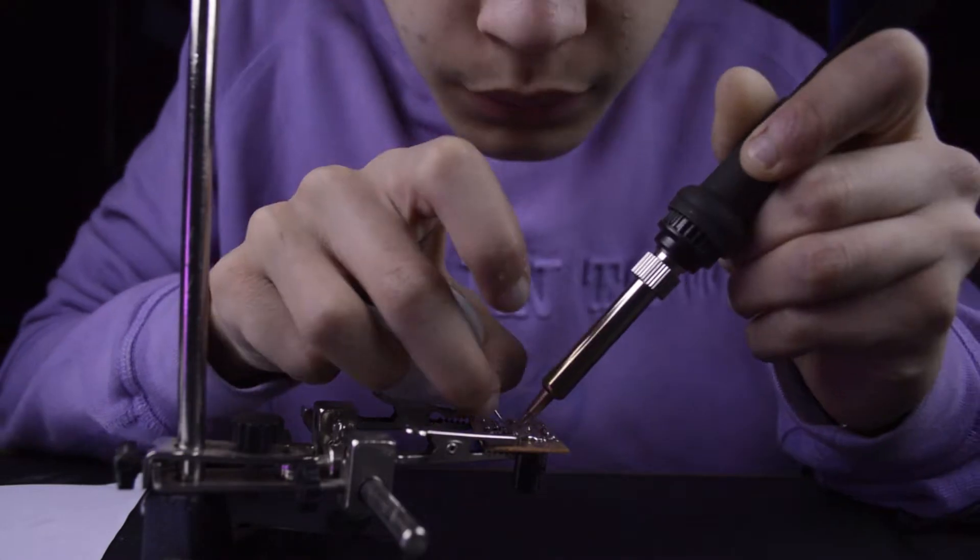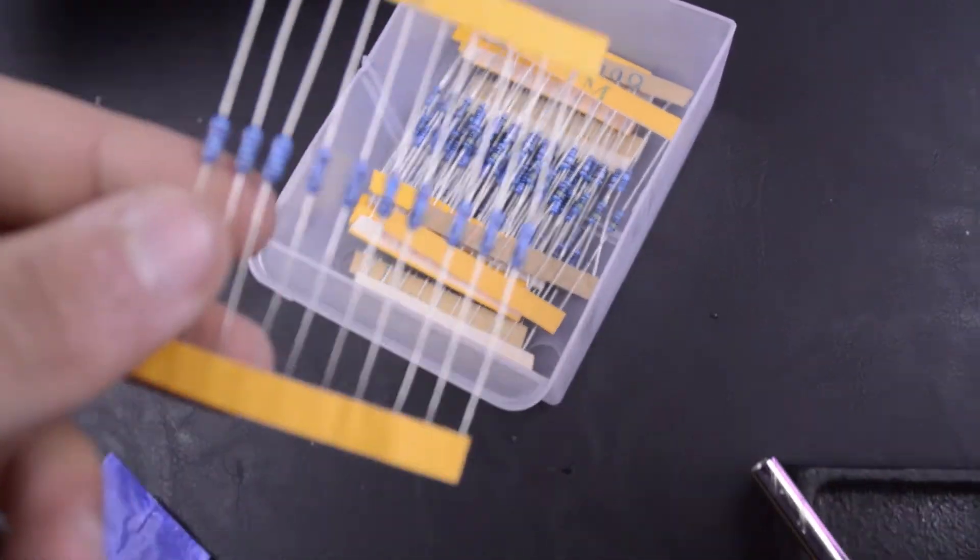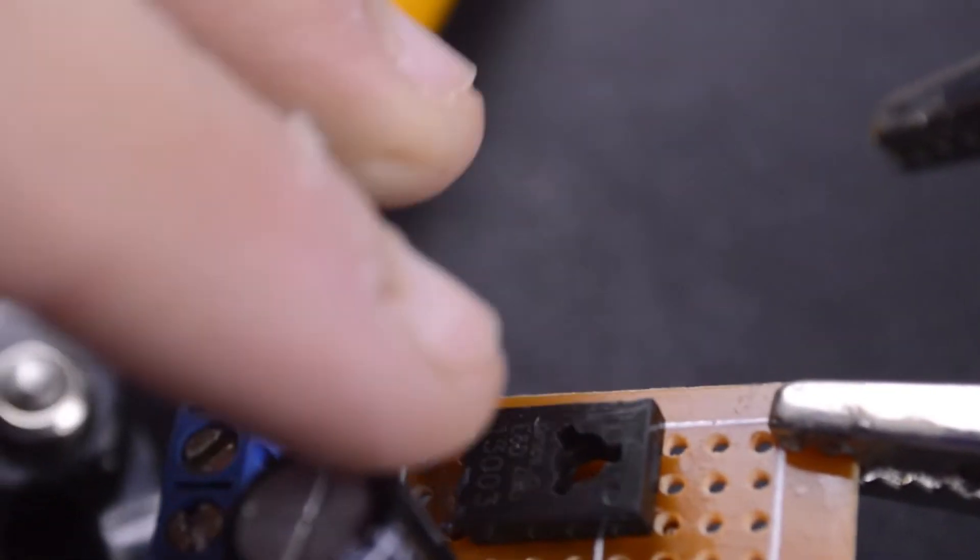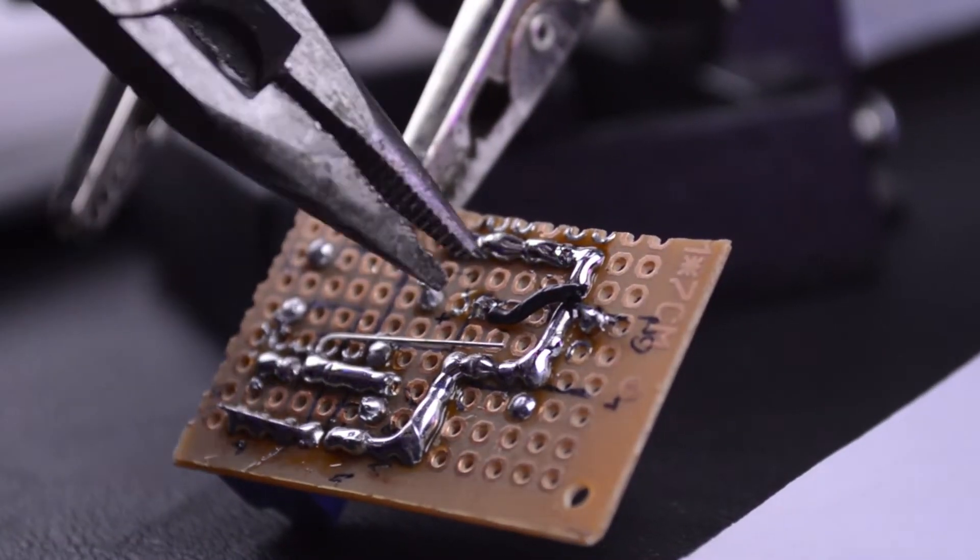So I finished soldering the components on PCB, we need to add a resistor, a 10K resistor. And now we need to solder the audio jack and we are good to go.